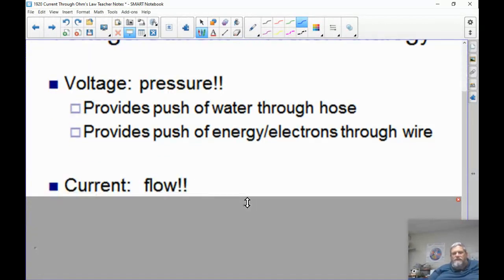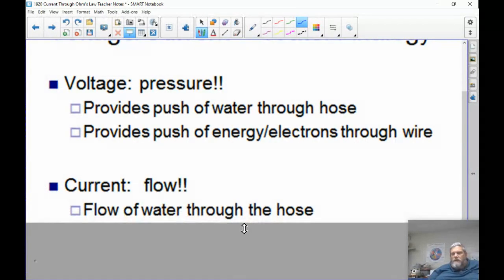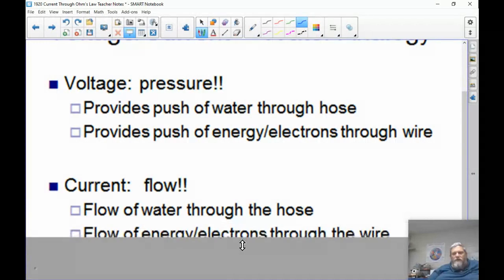The current itself is like the actual flow. It's the electrons moving through the wire. So the flow is the flow of water through the hose or the flow of the electrons through the wire.